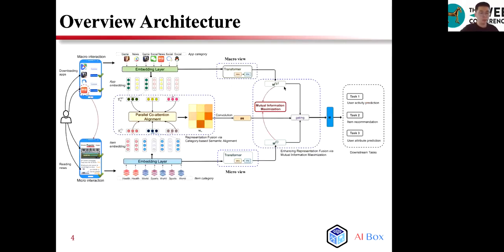Considering the above difficulties, we propose a novel micro-macro fusion network for user representation learning on mobile apps. To start with, we utilize the Transformer architecture to encode macro and micro-interaction data. Then, we propose to fuse two kinds of user representations via category-based semantic alignment. After such semantic alignment, the information across the two views can be adaptively fused.